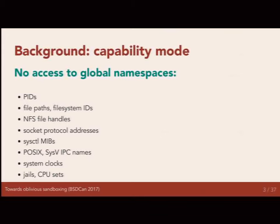Capsicum has two main ideas, and they're both quite simple. The first one is capability mode. You can take a process and put it into capability mode by calling the syscall cap_enter. When you're in capability mode, there is no more access to global namespace. You cannot open files, you cannot connect sockets with addresses, you cannot access PIDs, file system IDs, NFS file handles, or any other namespaces that exist in a Unix system. No global namespace access allowed.